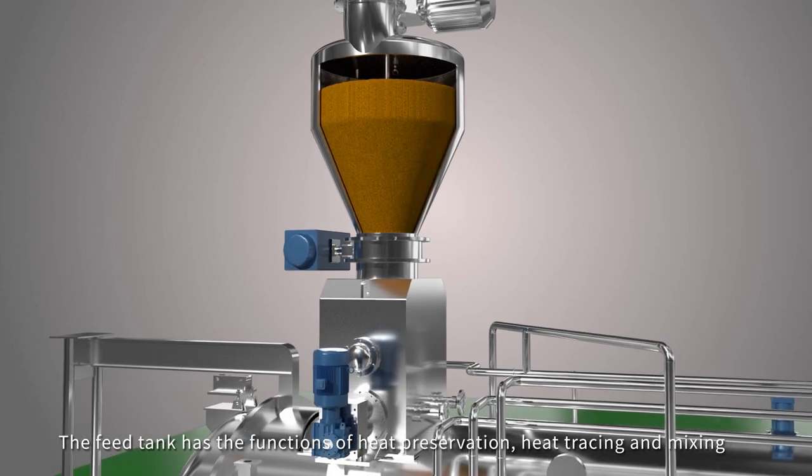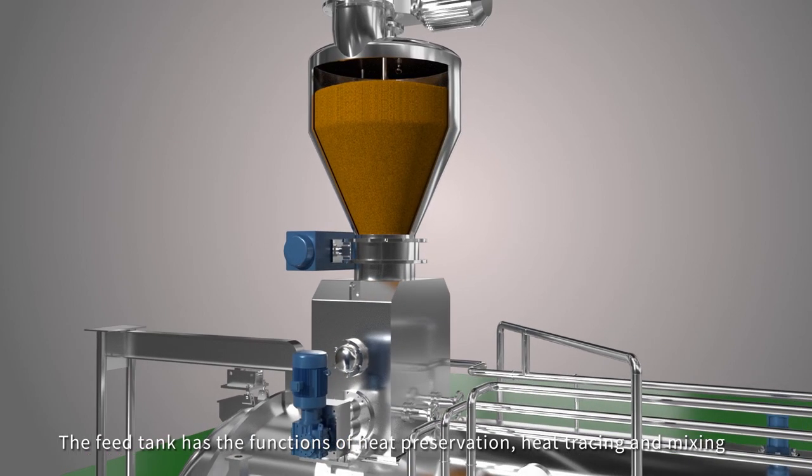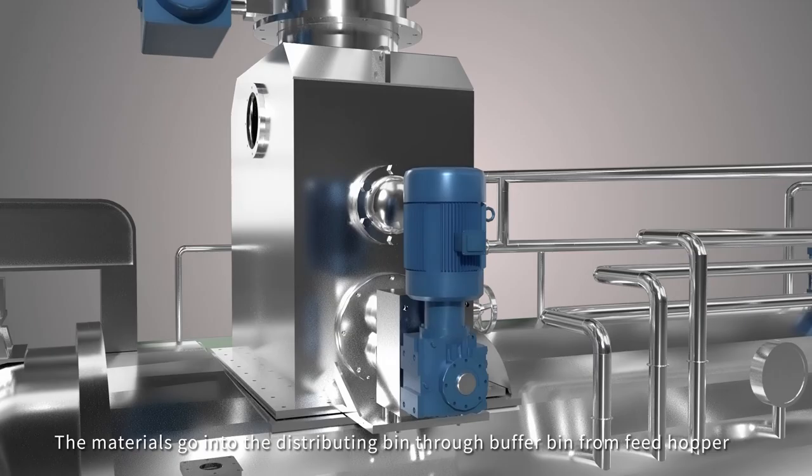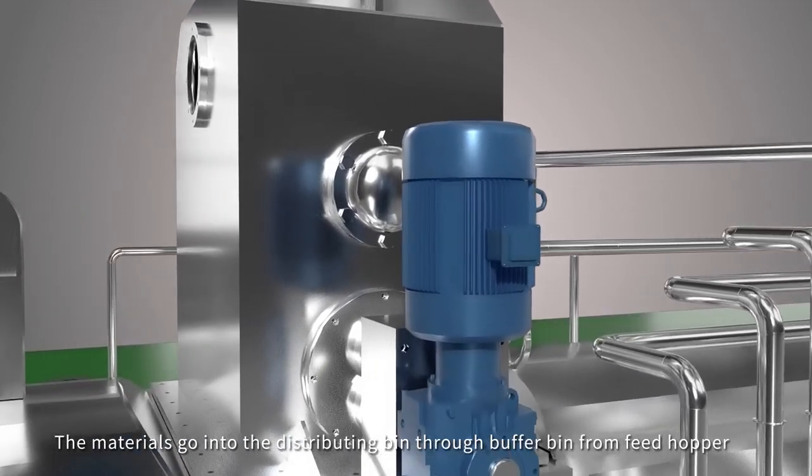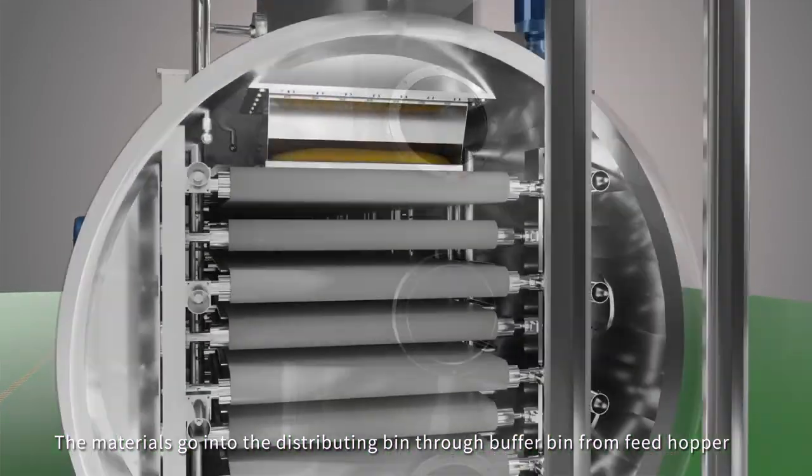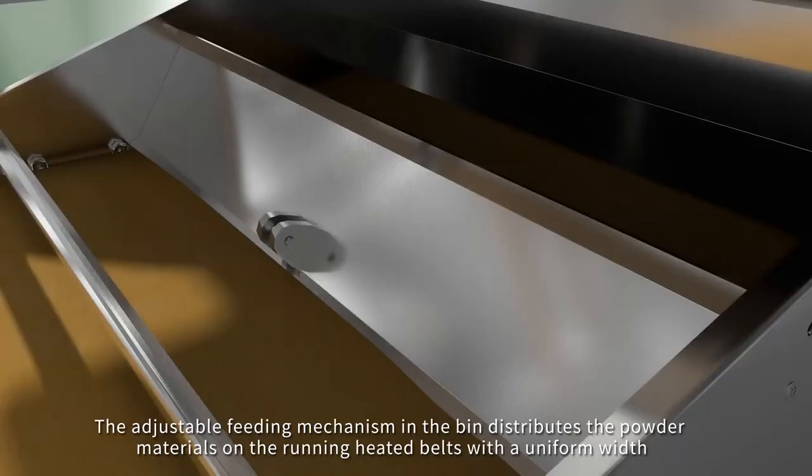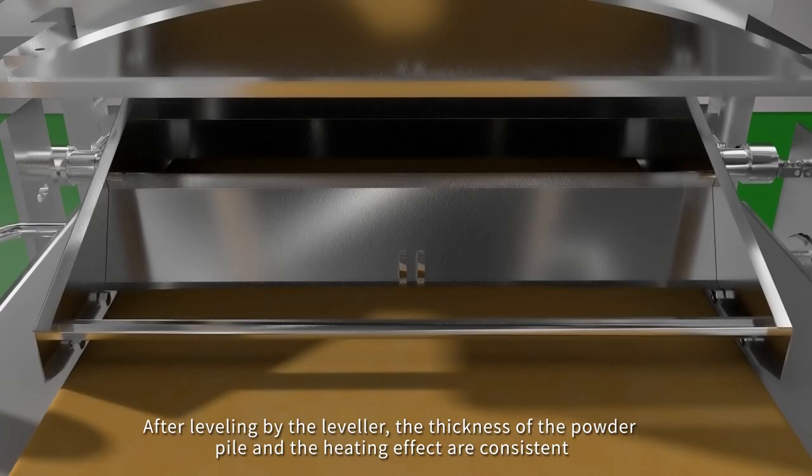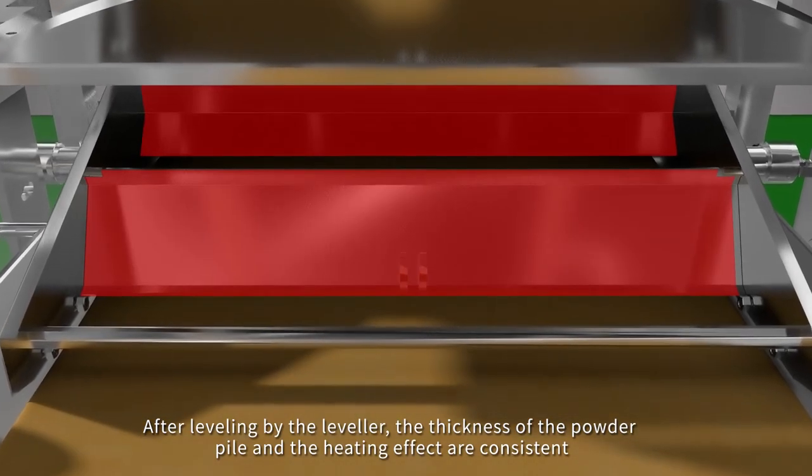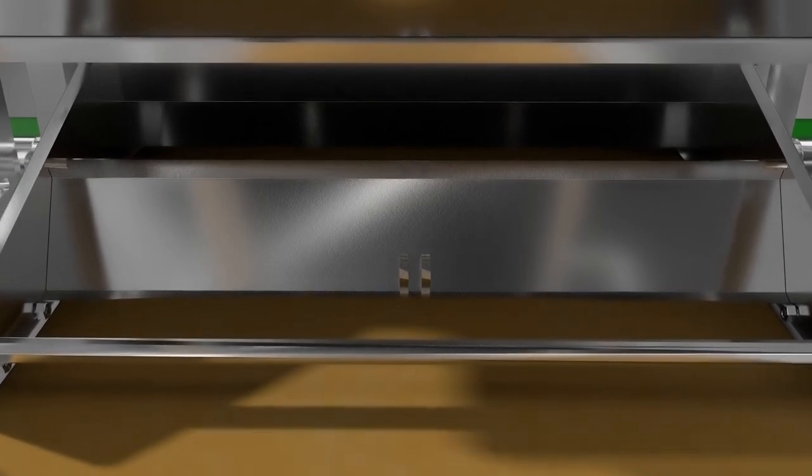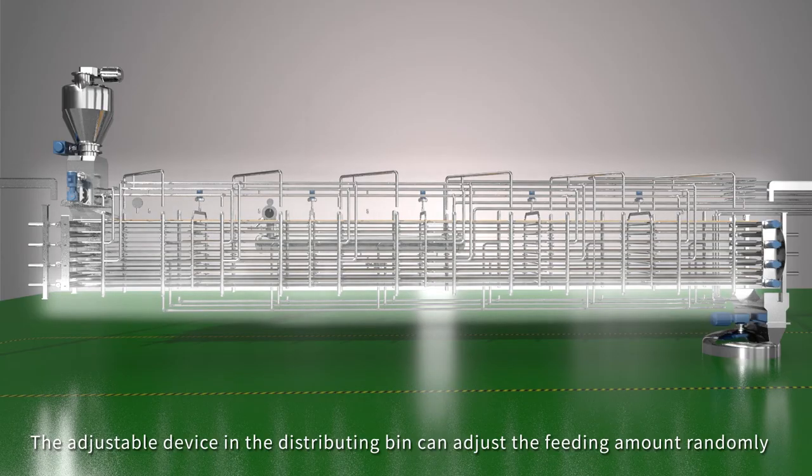The feed tank has the functions of heat preservation, heat tracing, and mixing. The materials go into the distributing bin through buffer bin from feed hopper. The adjustable feeding mechanism in the bin distributes the powder materials on the running heated belts with a uniform width. After leveling by the leveler, the thickness of the powder pile and the heating effect are constant. The adjustable device in the distributing bin can adjust the feeding amount randomly.